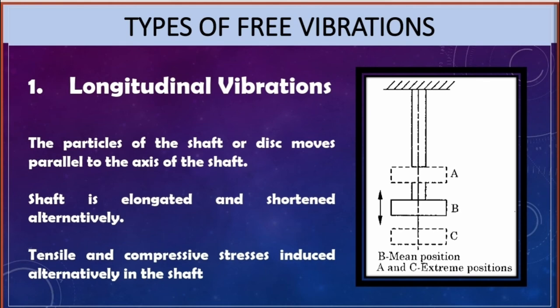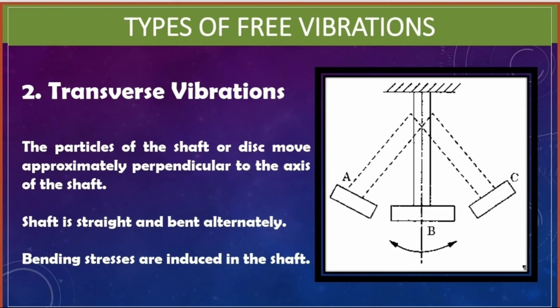Transverse vibrations: in transverse vibrations, the particles of the shaft or disc move approximately perpendicular to the axis of the shaft. B is the mean position; A and C are the extreme positions. Particles move approximately perpendicular to the axis when moved to C and A positions. The shaft is straight and bent alternatively, and bending stresses are induced in the shaft.